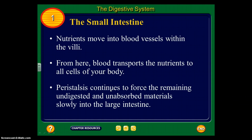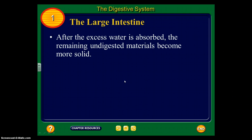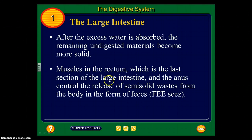Peristalsis continues to force the remaining undigested material slowly into the large intestine. When the chyme enters the large intestine, it is still a thin, watery mixture. The large intestine absorbs the water from the undigested mass, which helps maintain homeostasis — that balanced, normal state. After the excess water is absorbed, the remaining undigested material becomes more solid. Then muscles in the rectum — the last section of the large intestine — and the anus control the release of semi-solid waste in the form of feces.